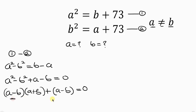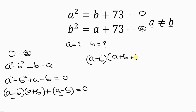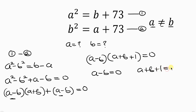Notice that (a minus b) is common, so we can factor out (a minus b). Opening a bracket, (a minus b) divided by (a minus b) gives (a plus b), and the second term divided by (a minus b) is 1. So we have (a minus b)(a plus b plus 1) equal to 0. From here we have two cases: a minus b equals 0, and a plus b plus 1 equals 0.